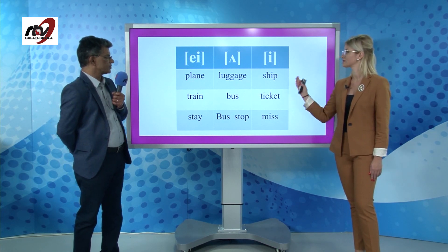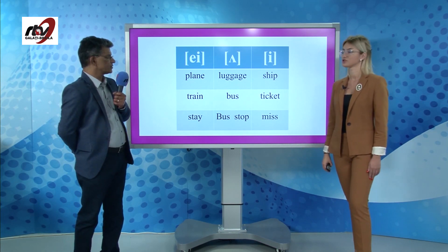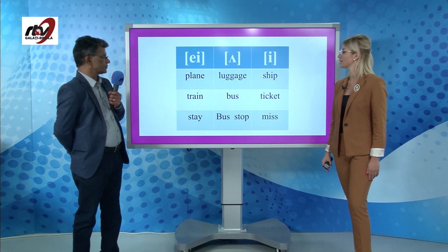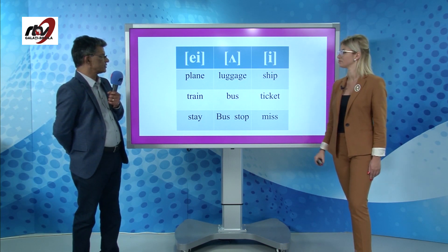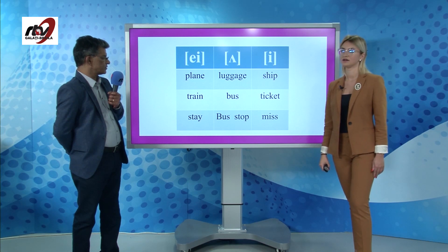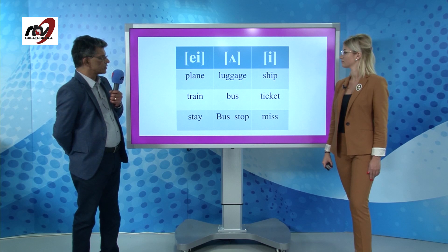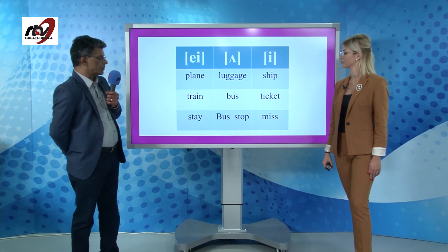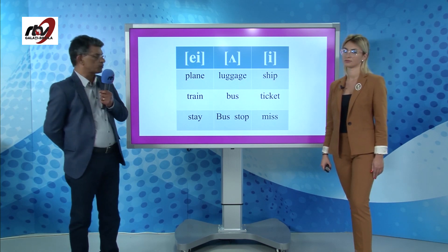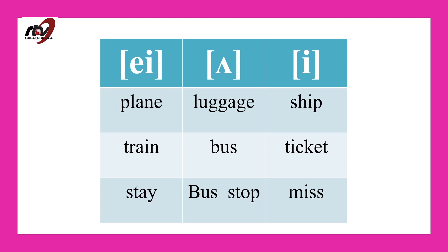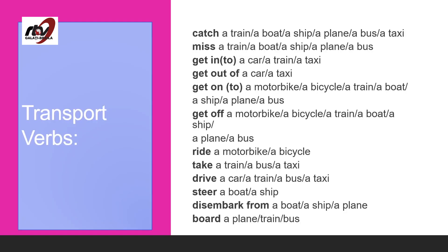Concerning the phonetics, we have three groups of letters. The long 'A' sound as in plane, train, stay. The short 'A' sound as in luggage, bus, bus stop. And the short 'I' sound as in ship, ticket, miss.